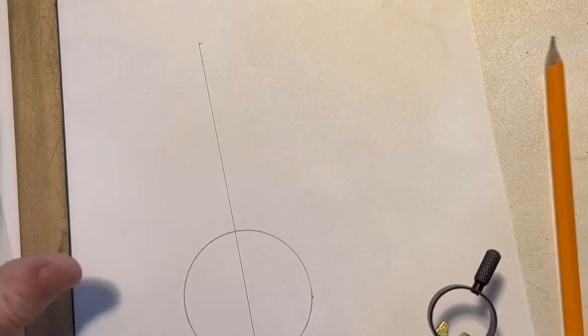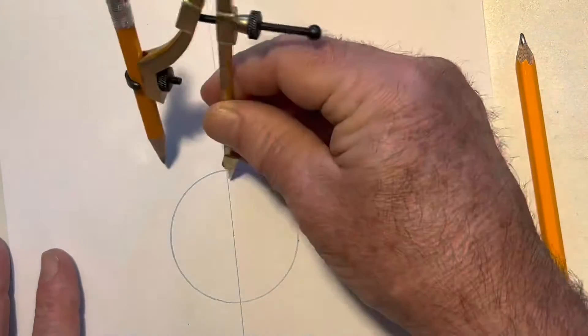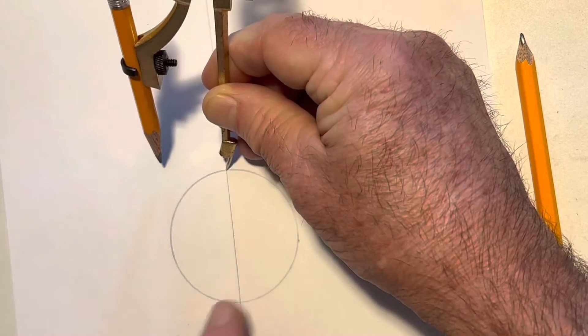There we go. Now, again, the vesica piscis is the connected circles. Oops, I got out of the frame here. I'll put this one over here, put this one right on this point and turn this circle.